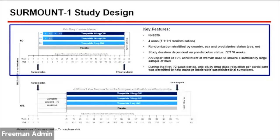Surmount One study design. There were 2,539 participants in the trial. There were four arms, randomized one to one to one to one, and randomization was stratified by country, sex, and prediabetes status.